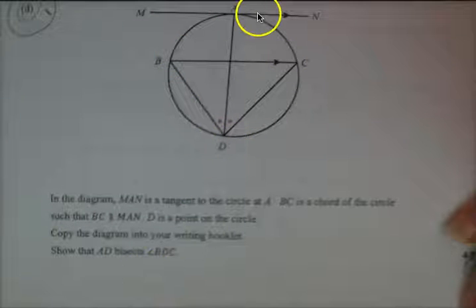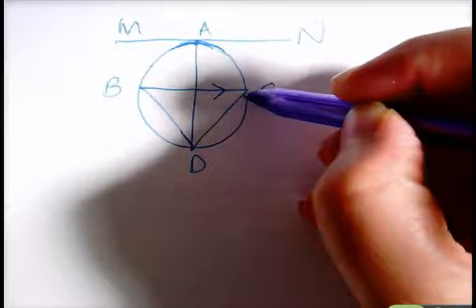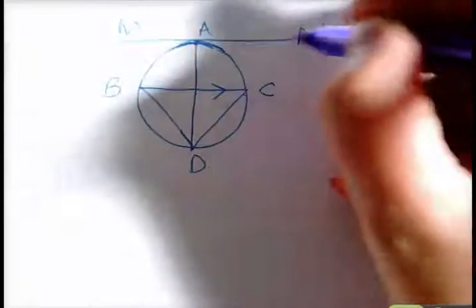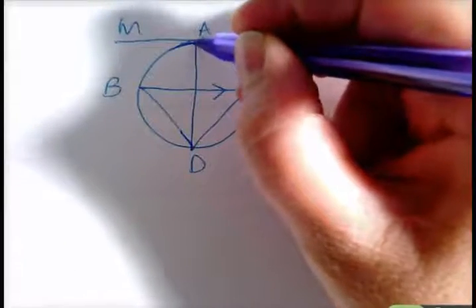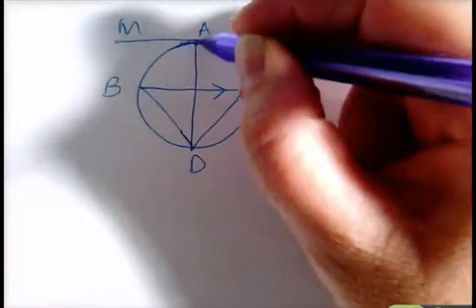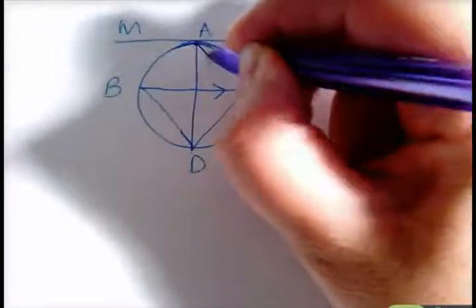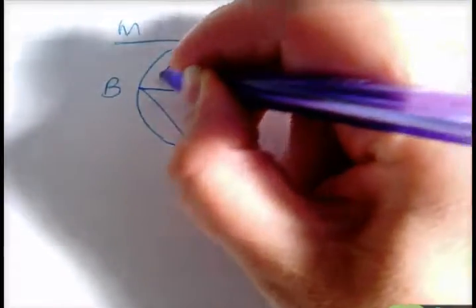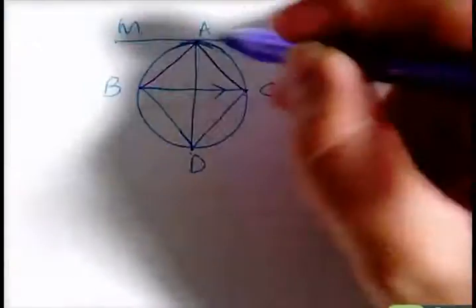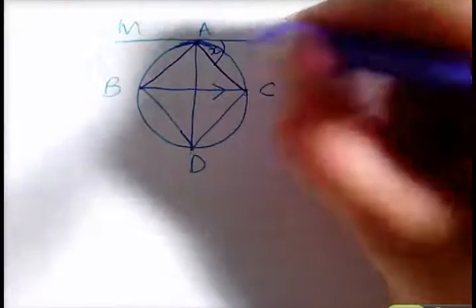It looks like you're really going to have to construct some lines here. I'm going to go over to my paper to prove that AD bisects angle BDC. You've got a tangent, and there are a few rules. Angle between tangent and chord equals angle in alternate segment. I'm thinking of joining AC and joining AB.